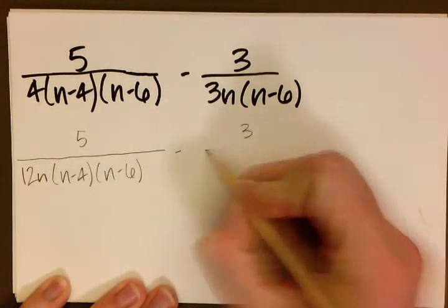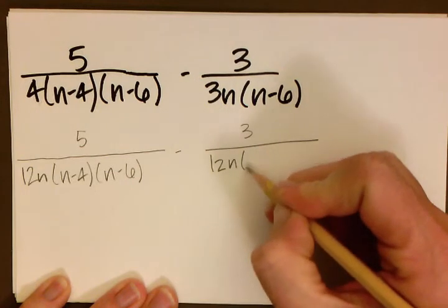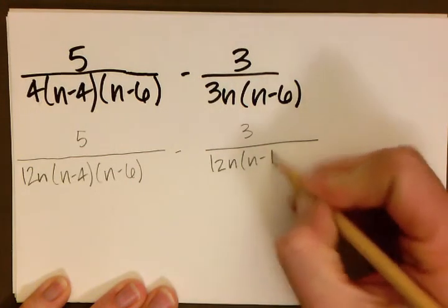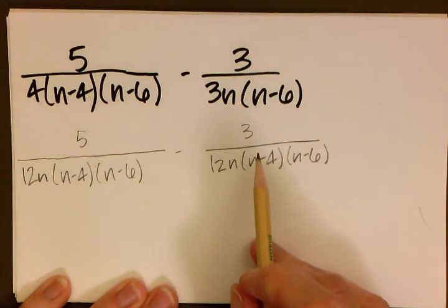I'm going to subtract from that. And our denominator stays the same in both now. We have a common denominator. The numerator in the second fraction is still 3.